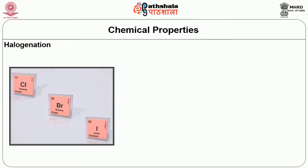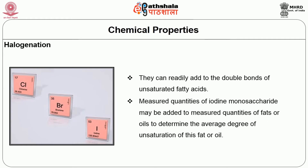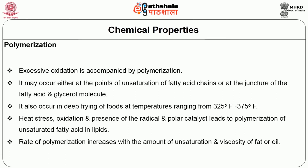Halogenation is a very important chemical property of lipids. Halogens like chlorine, bromine, and iodine can readily add to the double bonds of unsaturated fatty acids. The degree of halogenation is directly proportional to the number of double bonds that can accept halogen groups.